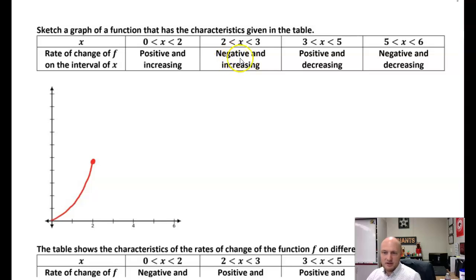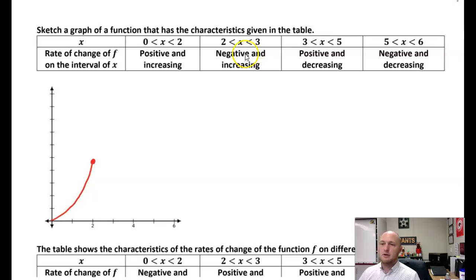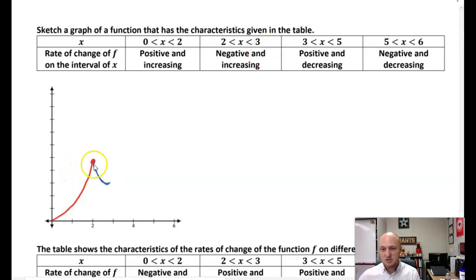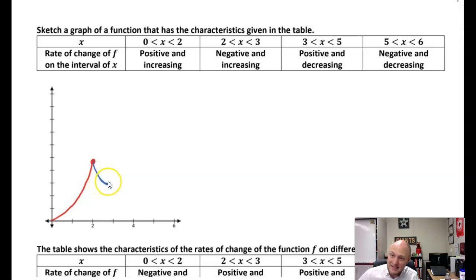For the next one, I want the rate of change to be negative but increasing. So if it's negative, the function is going to be going down, but the rate of change is going to be increasing. From two to three, something like this. The slope is negative but it's getting less and less negative — so that's technically an increasing rate of change. Notice both of these, where the rate of change is increasing, my graph is concave up.